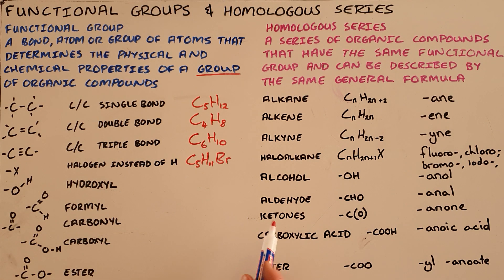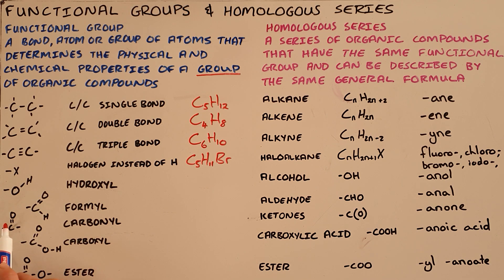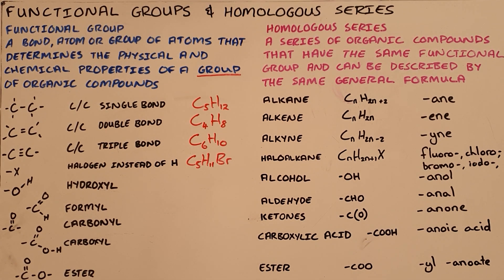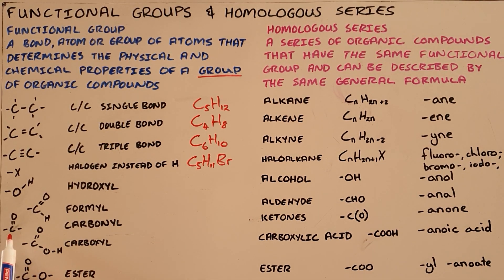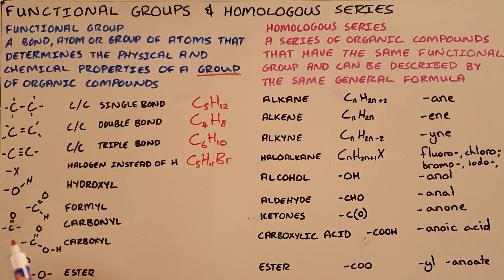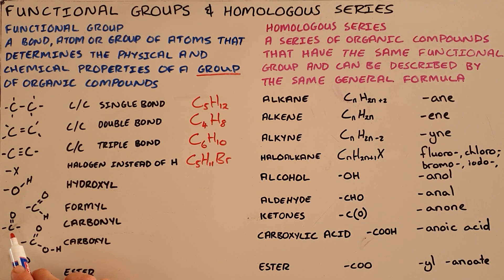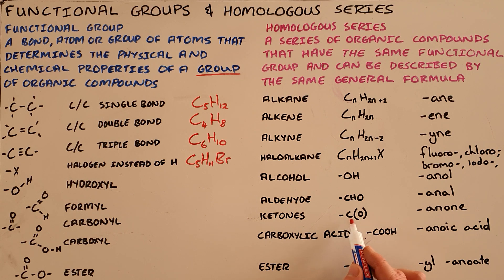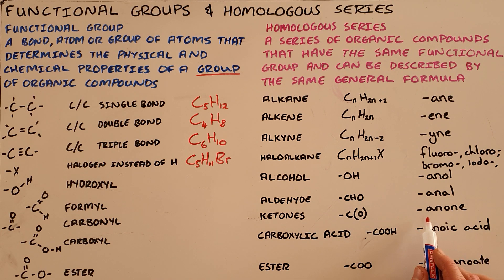Very similar to the aldehydes are the ketones, where we have the carbonyl functional group, which is a carbon that is double bonded to an oxygen but can form two chains, one on either side of that carbon atom bonded to the oxygen. Any compound that contains a carbonyl functional group is a ketone, represented with CO in brackets, and it gets the suffix -one.